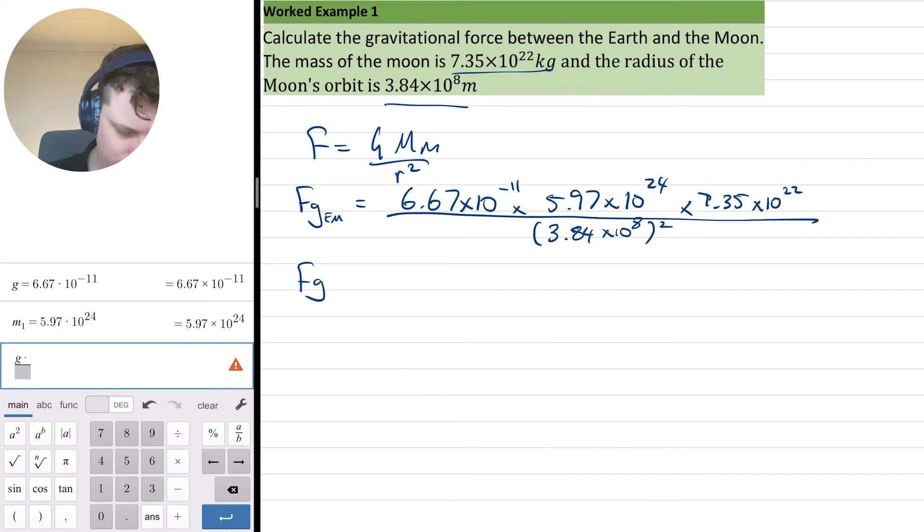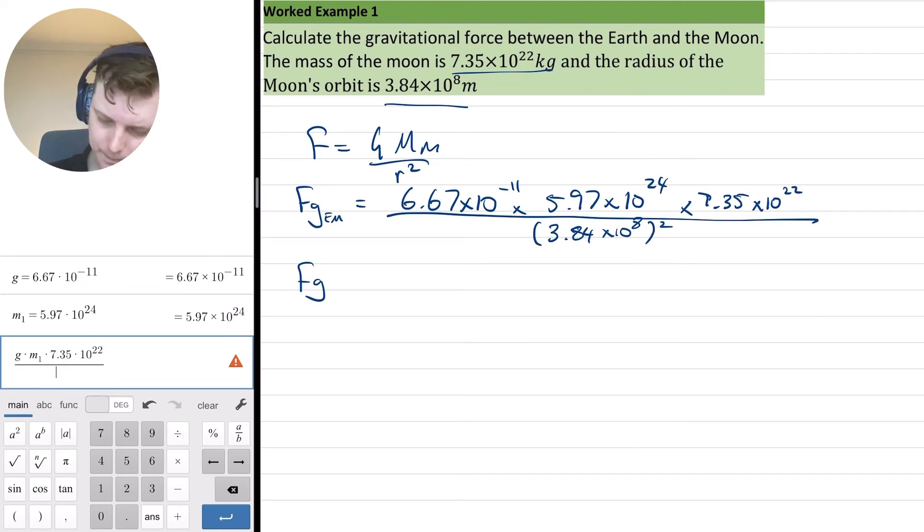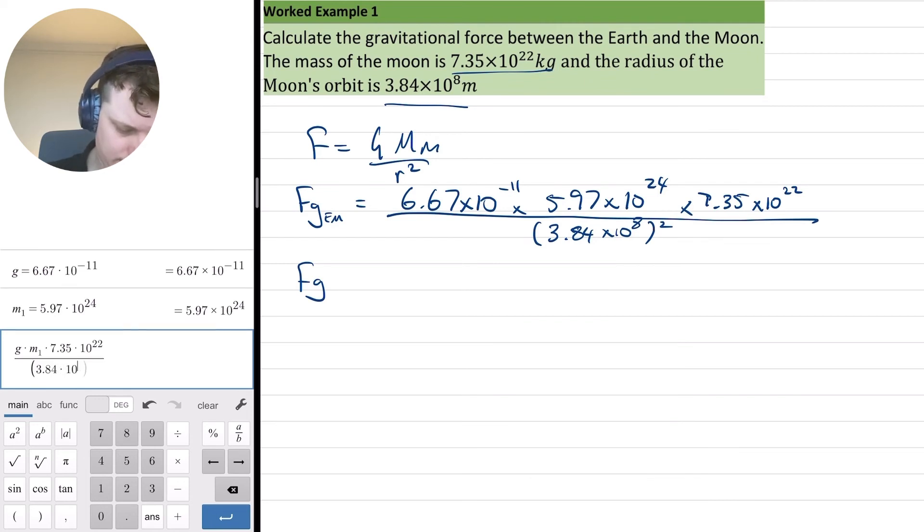So g times m1 times 7.35 times 10 to the 22. Remember to use my brackets here, 3 divided by 3.84 times 10 to the 8 and all of that is squared. So I get the force of gravity is equal to 1.98 times 10 to the 20 newtons.